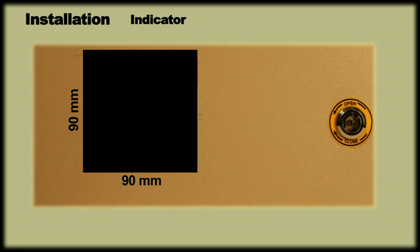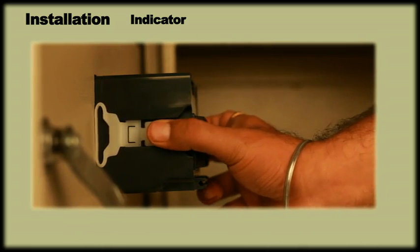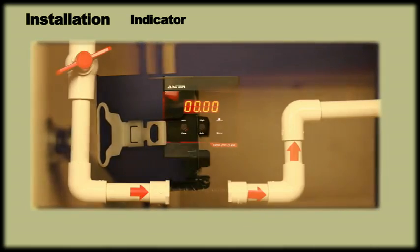For panel mounting, make a 90mm by 90mm cutout on your panel plate. Slide the meter through the cutout and fit it with side clips to lock it. That was all about the installation process. Now we shall see the wiring connection.